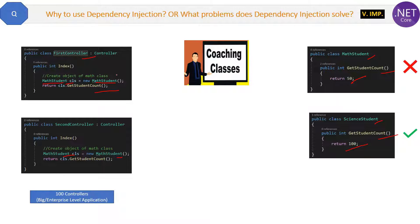In order to solve this problem, we have dependency injection. With dependency injection, we need not change the code of the controller — none of the 100 controllers — so the controller code remains the same. In other words, the application becomes loosely coupled, because the controllers are not impacted by changes in the MathStudent, ScienceStudent, or any other student classes.